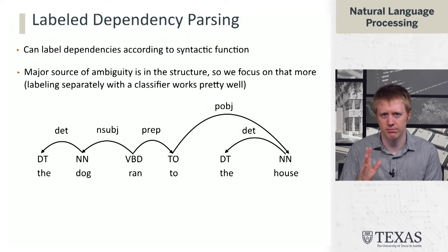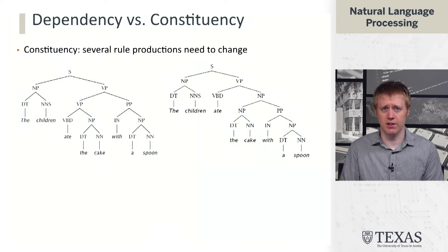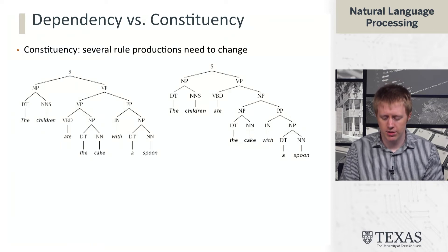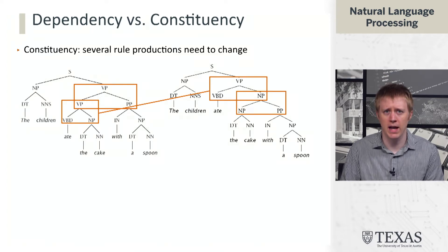We're not going to worry about labels too much when thinking about dependencies. Thinking about how this contrasts with constituency: in this prepositional phrase example — 'ate the cake with a spoon' — in constituency it was complicated how this worked. We had rules rearranging in a fairly major way; several rule productions had to change and be reordered. We do get the same 'VP goes to VBD NP' rule in both cases, but it's in a different position with respect to everything.